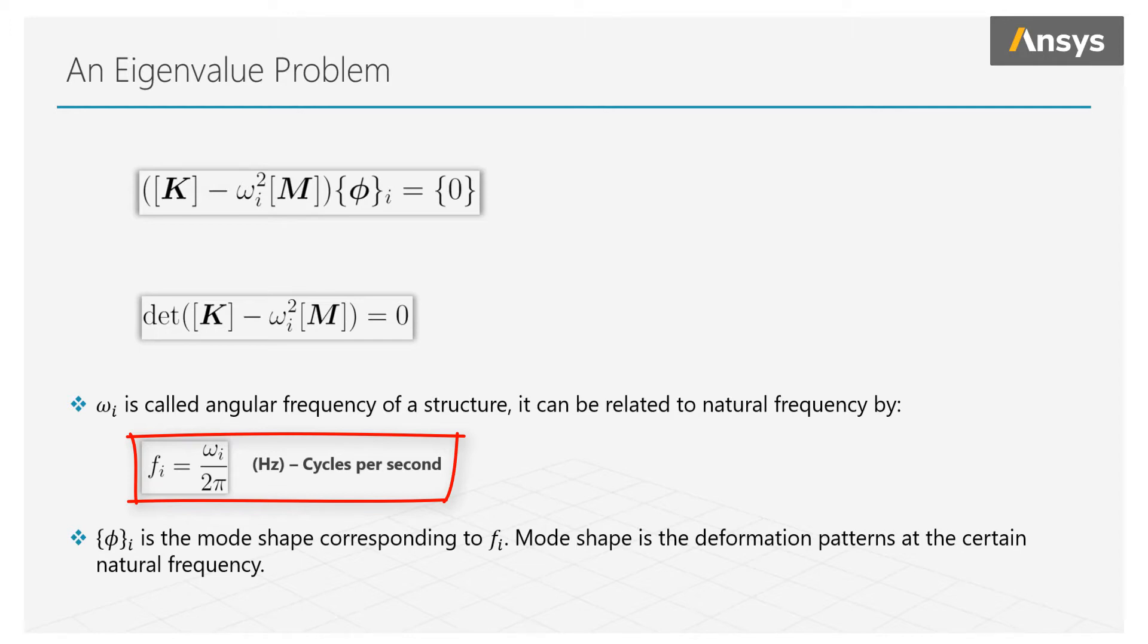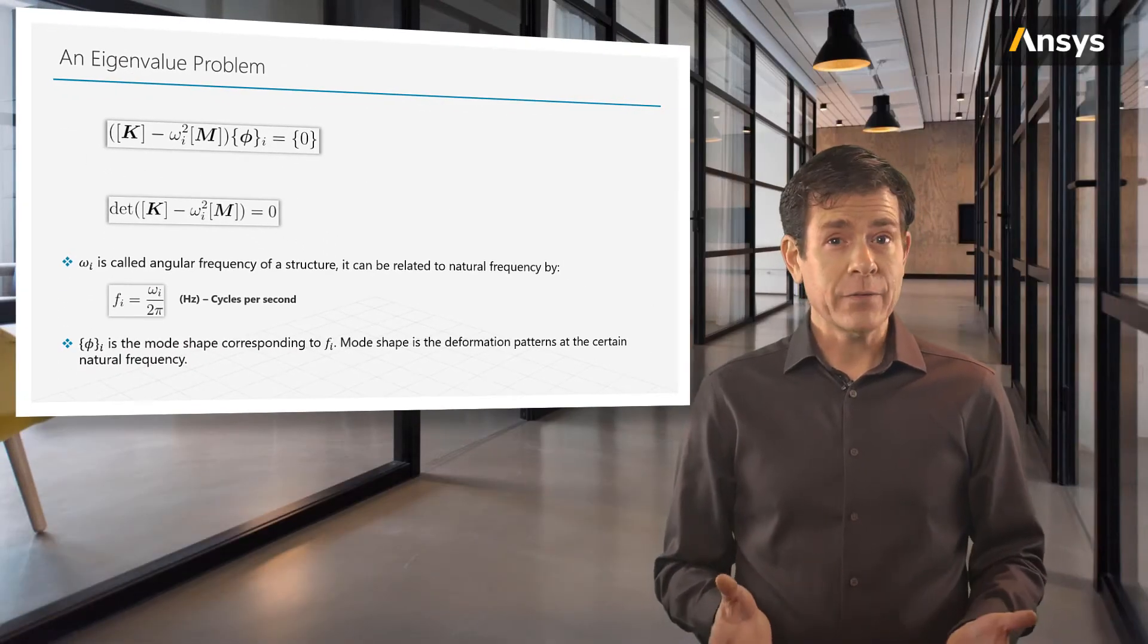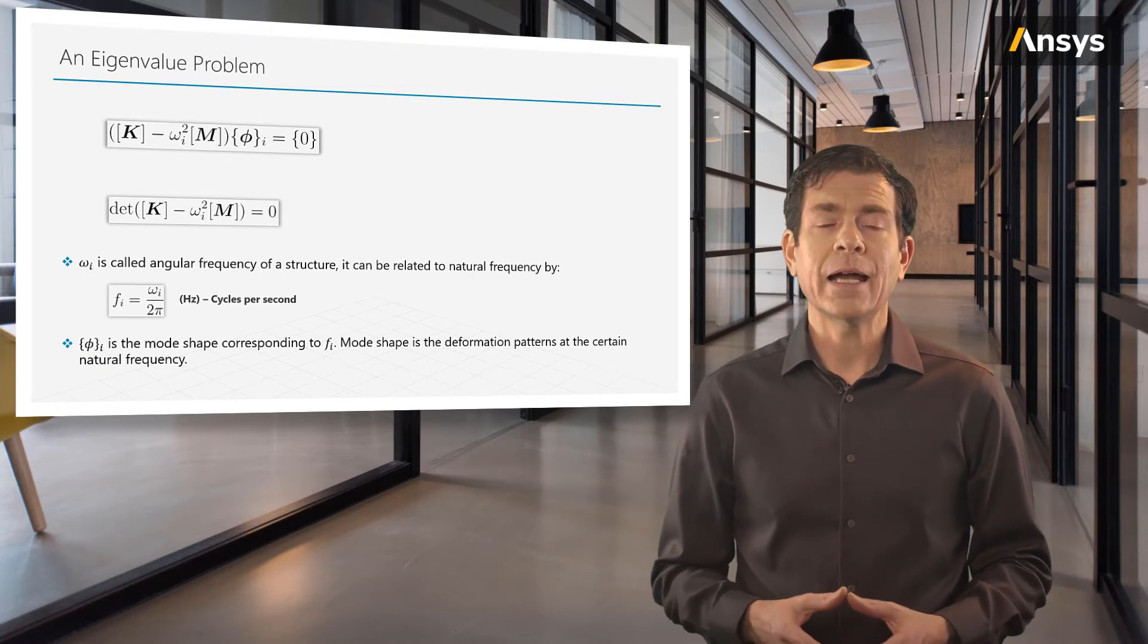Also, if the mass and stiffness matrix are of n by n dimension, then we can find n eigenvalues, and for each eigenvalue, there is a corresponding eigenvector phi.